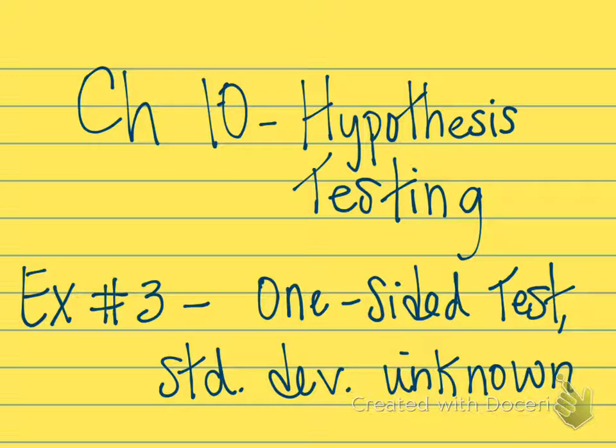This is the third in a series where I've worked out some additional examples to help you see how we conduct a hypothesis test. This is my third example, and this will be another one-sided test, but this time, unlike my first two examples, we do not know the standard deviation for our population. So we're not going to calculate a z-score. Instead, we're going to have to calculate that t-statistic.